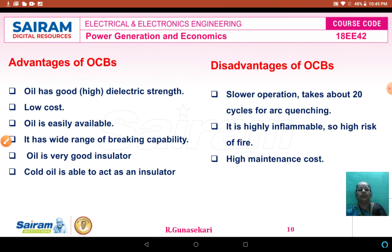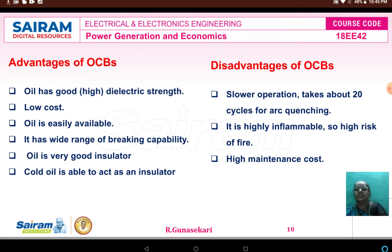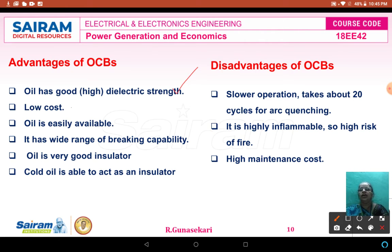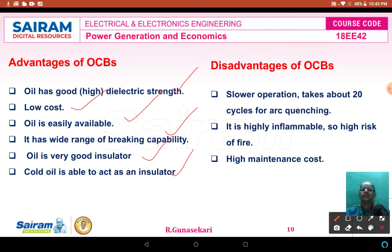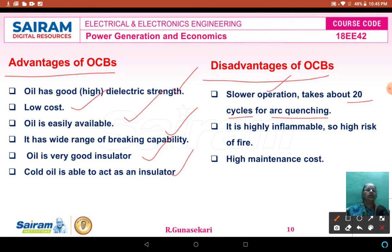Advantages of oil circuit breaker: the oil has good (high) dielectric strength, low cost, oil is easily available, it has wide range use due to high breaking capacity, and oil is a very good insulator. Disadvantages of oil circuit breaker: slower operation — 20 cycles for arc extinction — it is highly inflammable so there is high risk of fire, and high maintenance cost.